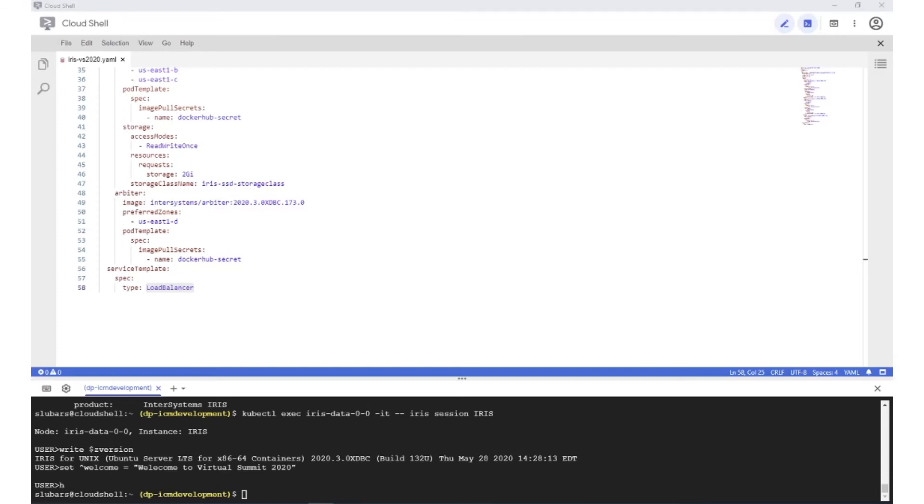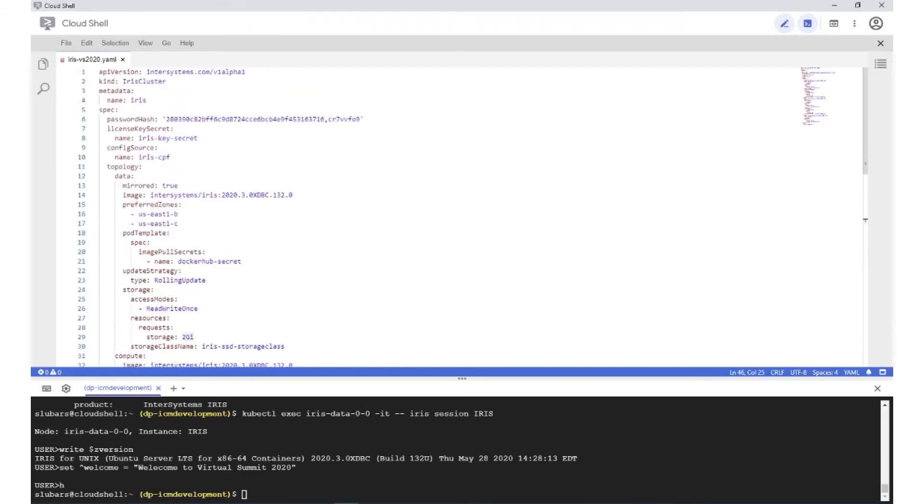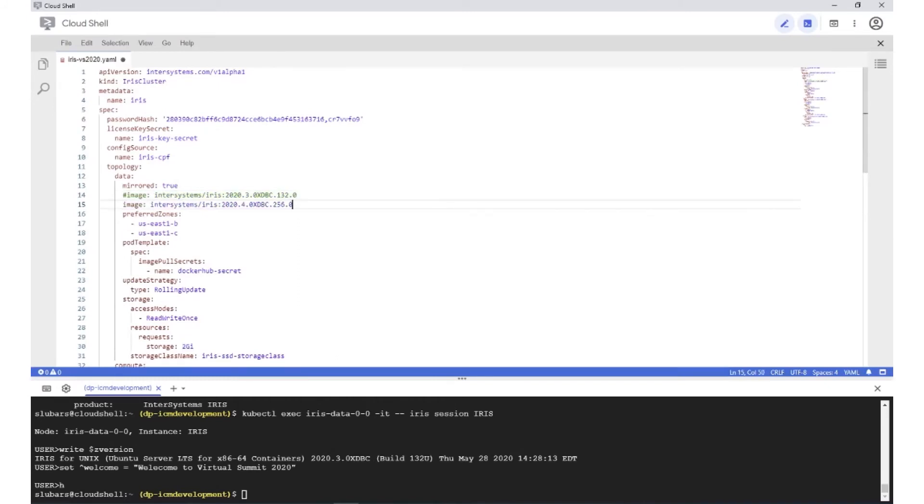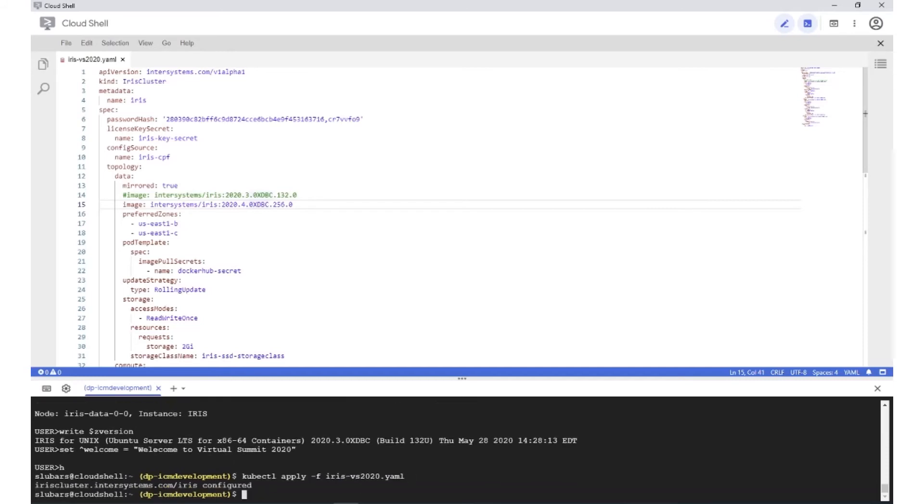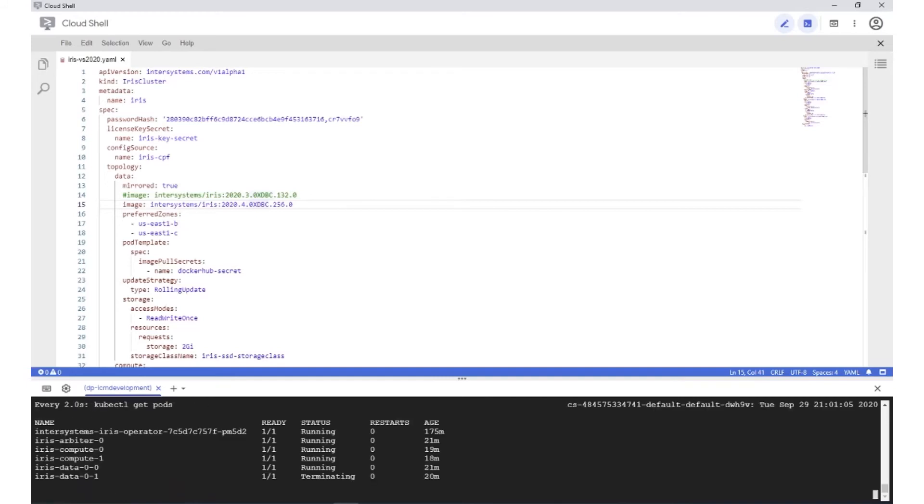So to do the upgrade, we simply replace the definition of the image here. I'll comment this one out, add this one, the 2020.4 image that we have staged, and I will reapply the definition.